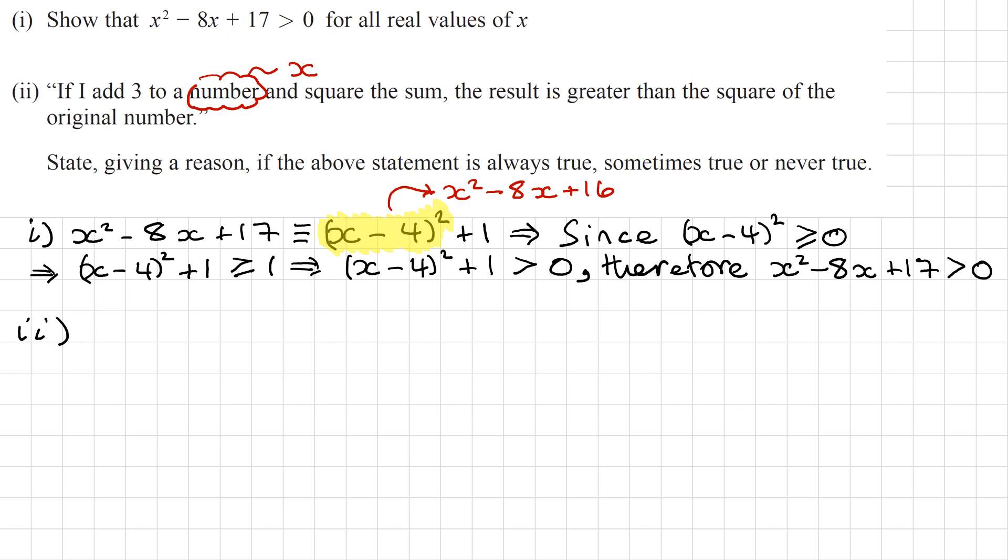So we're now going to write down what we have in quotes here as a statement, as some sort of inequality or equality or algebraic expression. So if I add 3 to a number, so my number is x, I'm adding 3 to a number, then I square the sum. So I need to put brackets because I'm going to sum them first, then square it. And we want to see if the result is greater than the square of the original number. So is this greater than the square of the original number? So we want to prove if this statement is true or not.